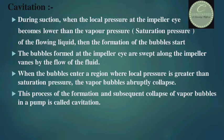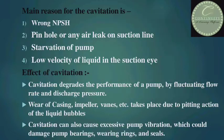The bubbles formed at the impeller eye are swept along the impeller vanes with the flow of the fluid. When the bubbles enter a region where local pressure is greater than the saturation pressure, the vapor bubbles abruptly collapse. This process of the formation and subsequent collapse of vapor bubbles in a pump is called cavitation.